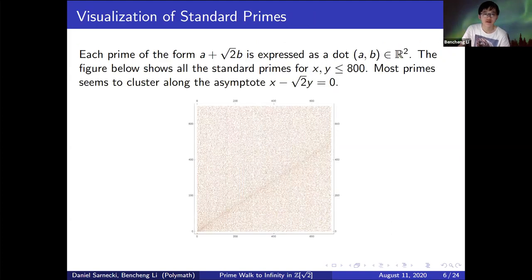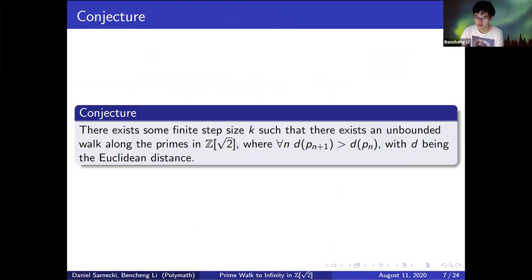The figure below shows how the number of primes in a disk of radius n in Z[i] and Z[√2] compare with each other. The blue points are the number of prime elements in Z[√2], and the red points are the number of prime elements in Z[i]. We can see that there are more primes in Z[√2] than Z[i], which agrees with our conjecture. Now we try to visualize these standard primes in Z[√2]. Here we represent each prime a + √2·b as a dot in R². The figure below shows all the standard primes for x, y less than 800. It's clear to see that most primes tend to cluster around the asymptote. There's clearly a line up there and the line is x - √2·y = 0. This is actually just the formula for the norm function x² - 2y² when the norm equals zero.